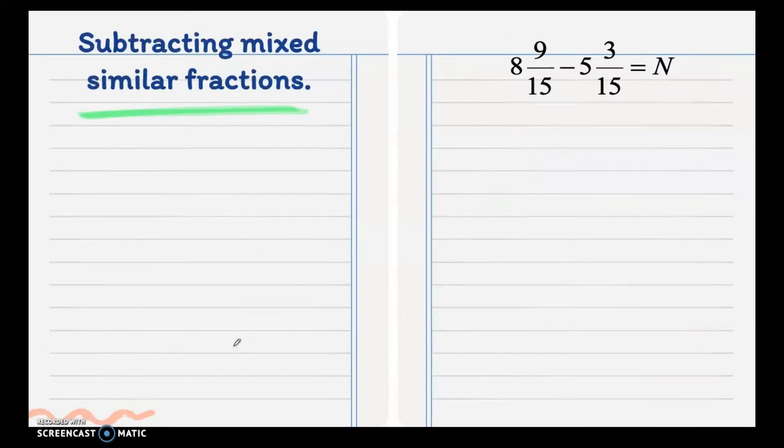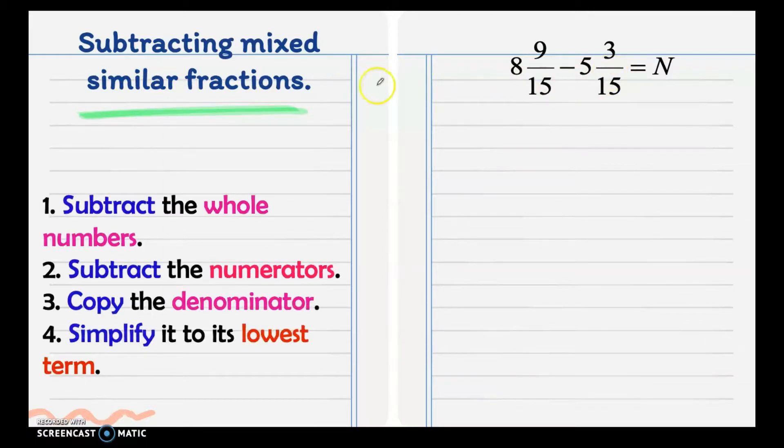Next, subtracting mixed similar fractions. Mixed fractions are fractions that have a fraction and a whole number. And since it's similar, they have same denominators. Here are the steps: subtract the whole numbers, we have 8 minus 5 that is 3. Then subtract the numerators, we have 9 minus 3 is 6.